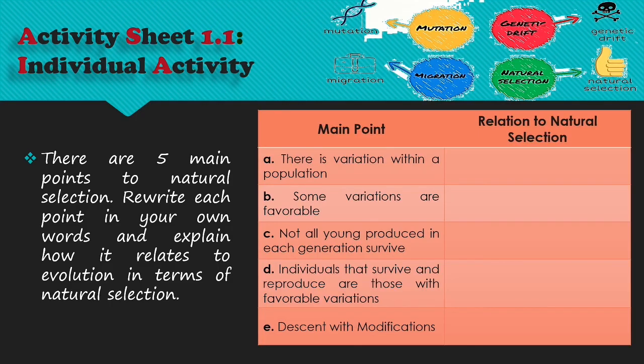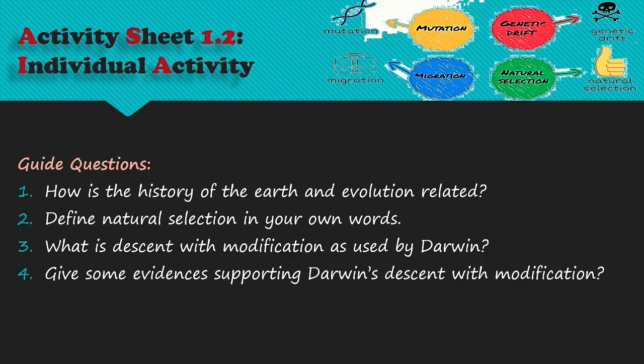For your individual activity, there is a table with five main points of natural selection. You are to rewrite each point in your own words and explain how it relates to evolution in terms of natural selection. Answer the following guide questions: 1. How is the history of the Earth and evolution related? 2. Define natural selection in your own words. 3. What is descent with modification as used by Darwin? 4. Give some evidence of Darwin's descent with modification.